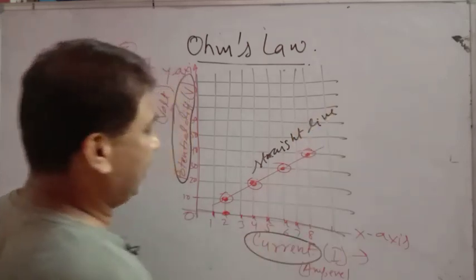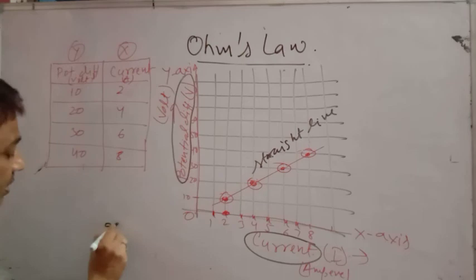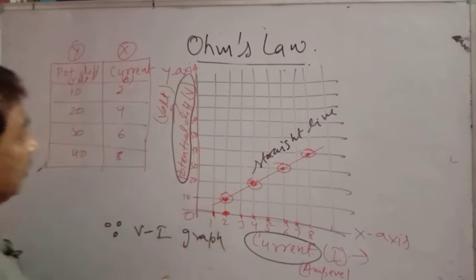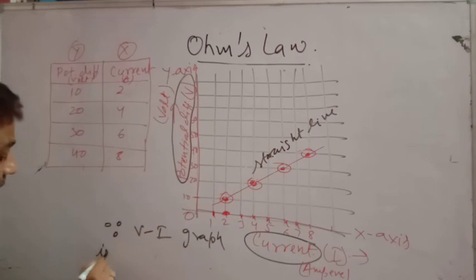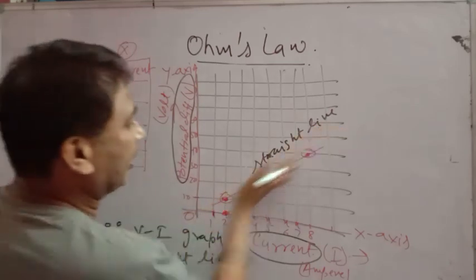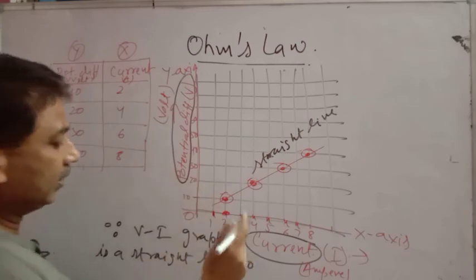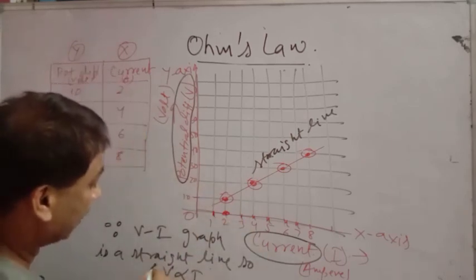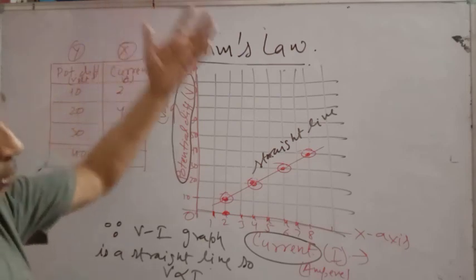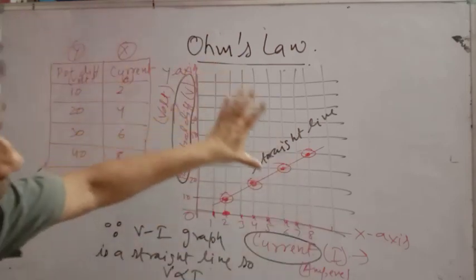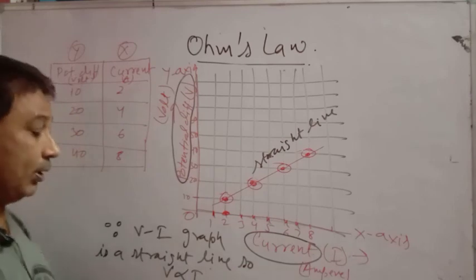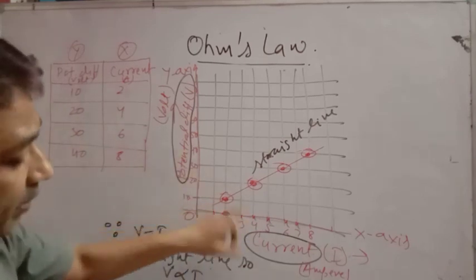A straight line graph is obtained only when the two quantities are proportional. Since the V-I graph is a straight line, it proves that V is directly proportional to I. So if asked to verify Ohm's Law, you should draw this table of values and plot the V-I graph to show that it is a straight line, which confirms that V and I are directly proportional.